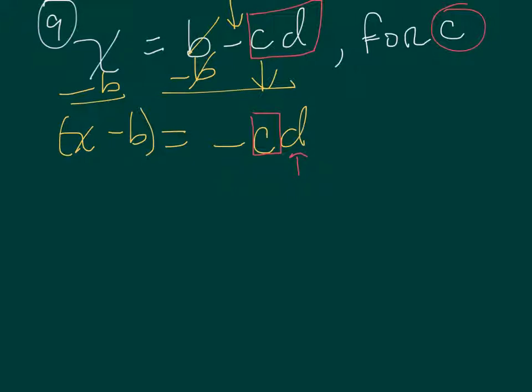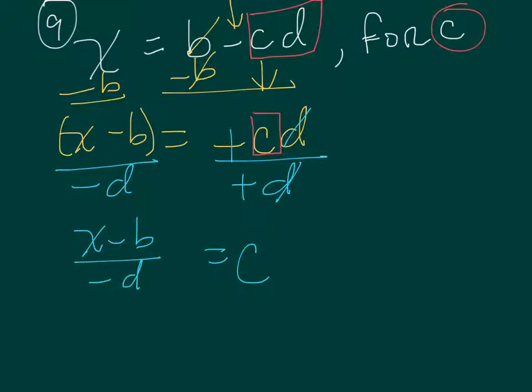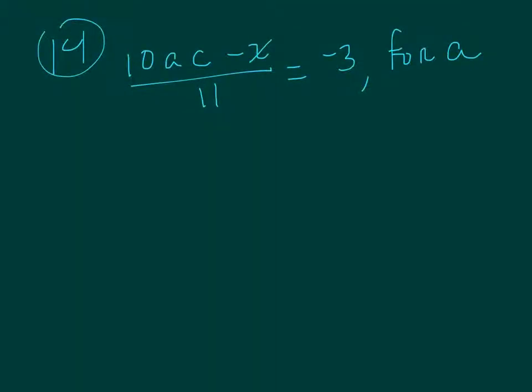So in this case, it's multiplication, so I'm going to divide by negative D on both sides. When I do that, the D's are gone, the negatives cancel out, and I'm left with C on the left hand side. Again I have X minus B on top divided by negative D, and again D cannot equal zero.